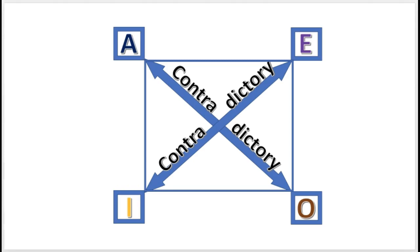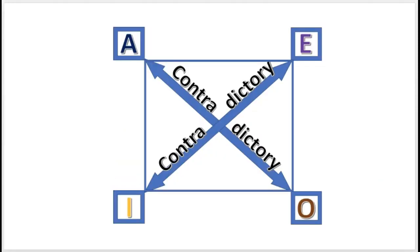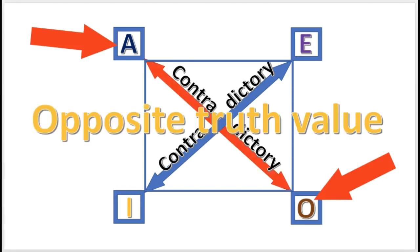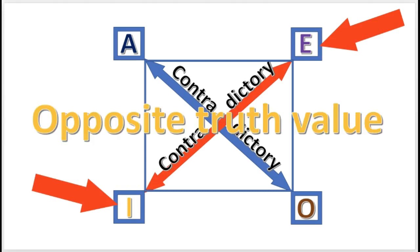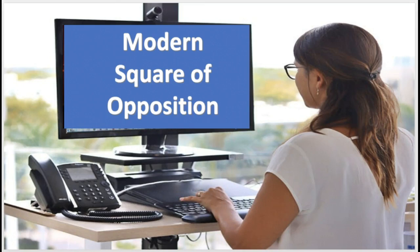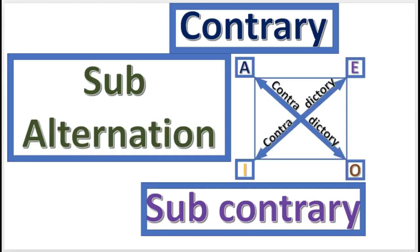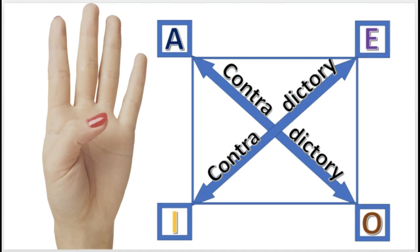Here is the square of opposition. These letters represent the four categorical propositions. The contradictory relation: A and O propositions contradict — they both have opposite truth values. And likewise, E and I propositions are contradictory; they have opposite truth value. See the video on the modern square of opposition for more information. In this video, we're going to see more relations: contrary, subcontrary, and subalternation — for a total of four relations.